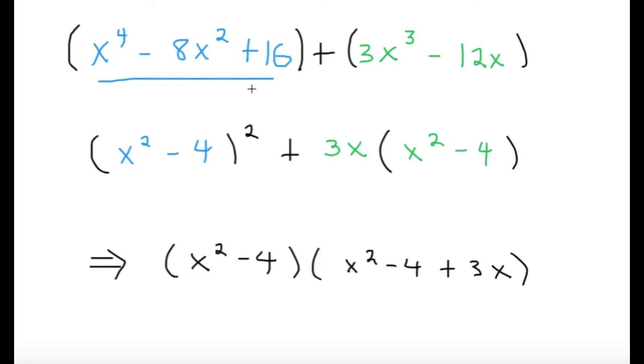Now this is nice because the blue part is simply a perfect square equal to x squared minus 4 quantity squared, and the green part, I can factor out a common factor of 3x in both terms. So I'll have 3x times x squared minus 4.